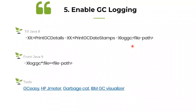To enable GC logging: if you run from JDK 1 to JDK 8, pass the arguments -XX:+PrintGCDetails, -XX:+PrintGCDateStamps, and -Xloggc with a file path such as /temp/my_gc.log. If you are running Java 9 or later, pass -Xlog:gc*:file= followed by the file path, and the GC log will be written there.